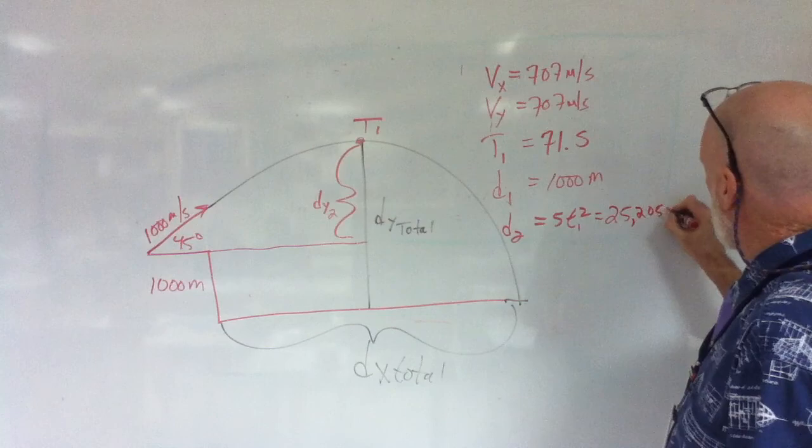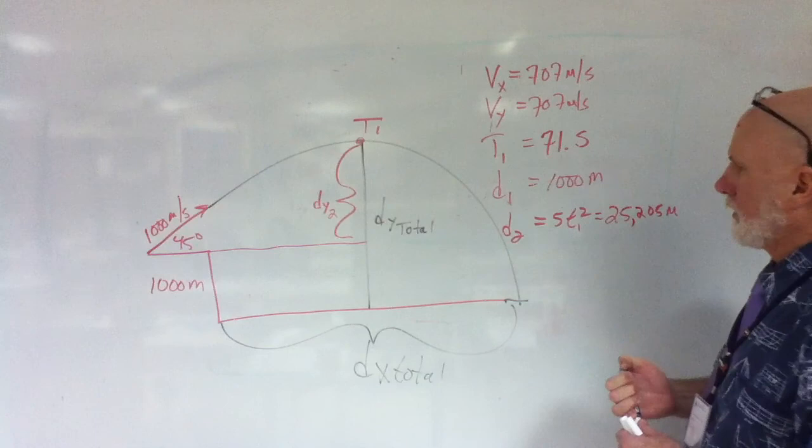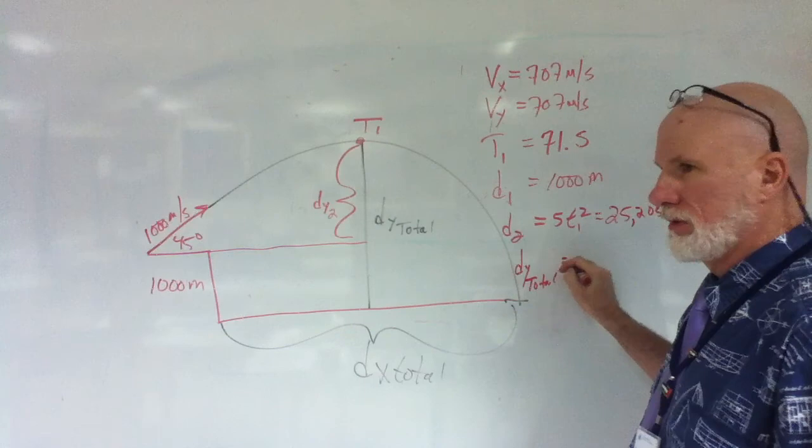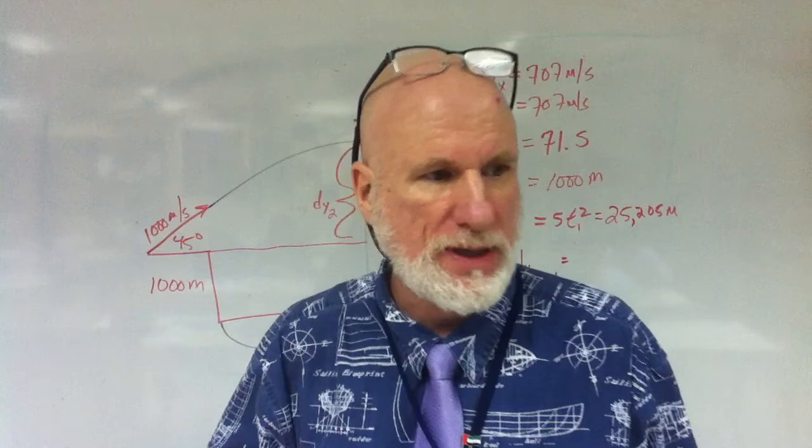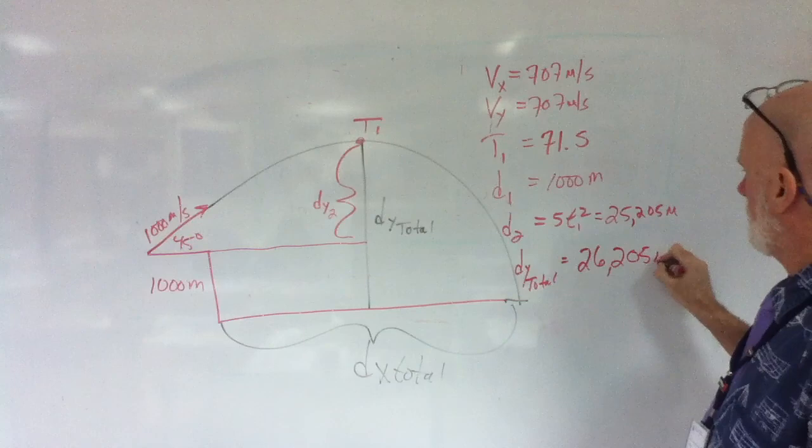Notice that this is not drawn to scale. It's not drawn to scale. Very important. All right, now. So, what's dy total? dy total is what? What's dy total? dy1 plus dy2. Yes, thank you. And so, what is that? 26,205. It would be dy1 is that, dy2 is going to be 26,205 meters. Correct? Is that right? Yes?